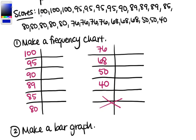So 100 appears 3 times, so we put 3. 95 is 4. 90 is 1. Why don't you pause the video and go ahead and try to fill in the rest of the frequency chart on your own.